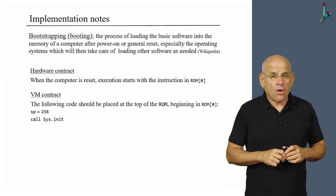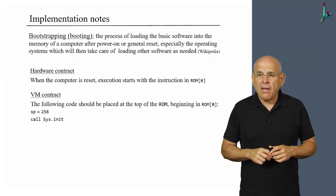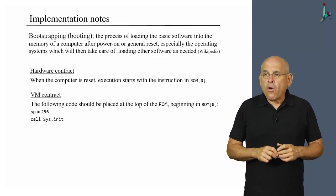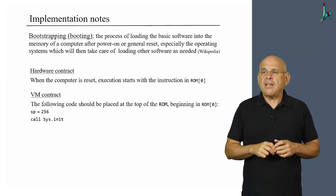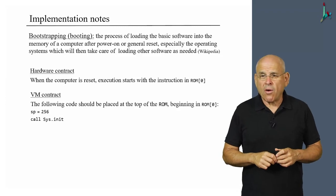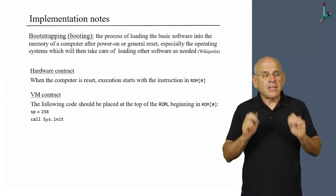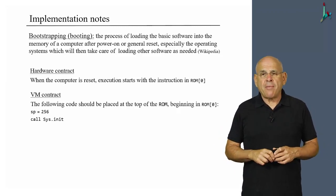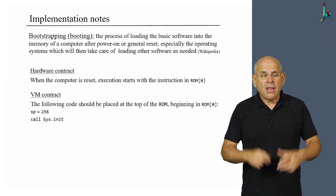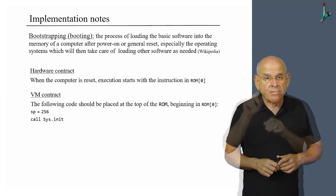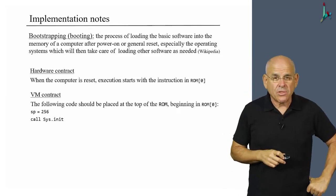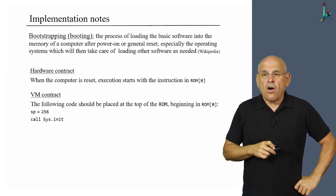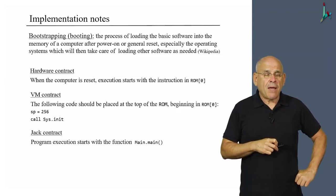Now the VM contract is such that the VM translator, when it translates the program that you want to run, always puts at the top of the ROM, at ROM 0, it puts the following two instructions: set the stack pointer to 256, which is a hack VM convention, and call sys.init. These commands must be written in machine language, of course, not in the VM language. So this is just pseudo-code. All right, the next contract is coming from Jack.